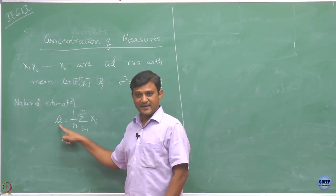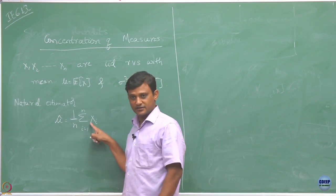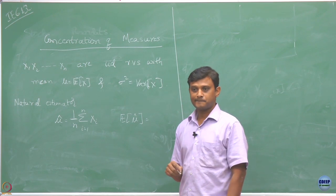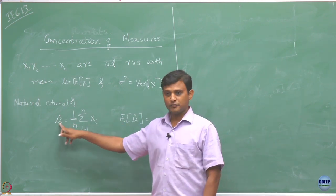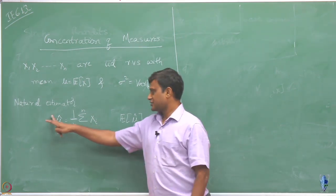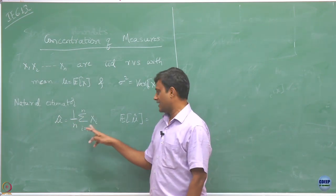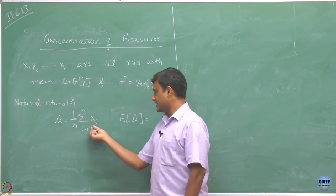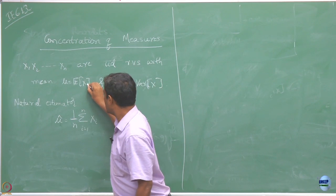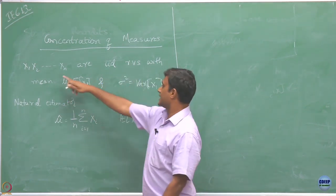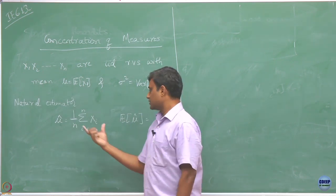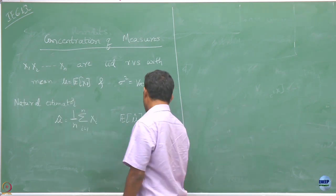μ̂ is a random quantity because it is an average of n random variables. The expected value of μ̂ equals the expectation of xᵢ, which equals μ — the common mean — since x₁, x₂, ..., xₙ are IID. So the expectation of μ̂ is μ, and this is true for any n.